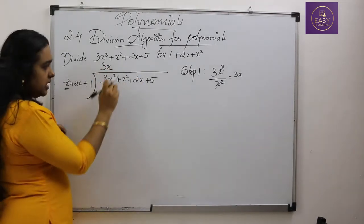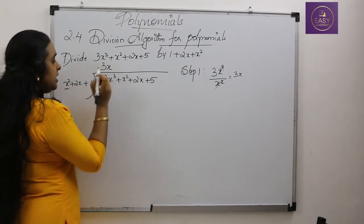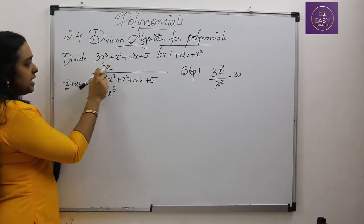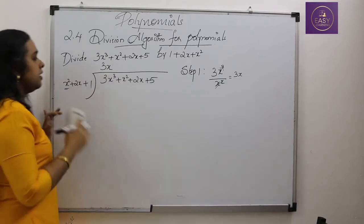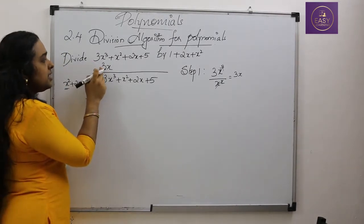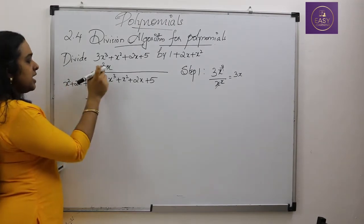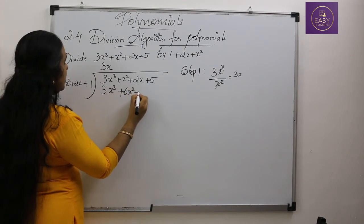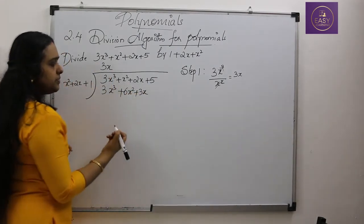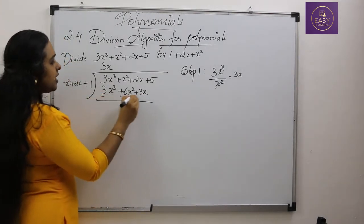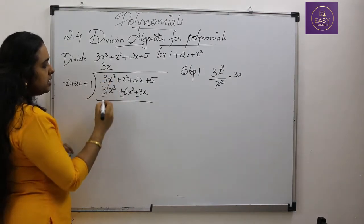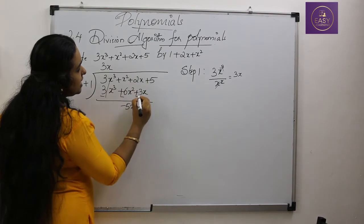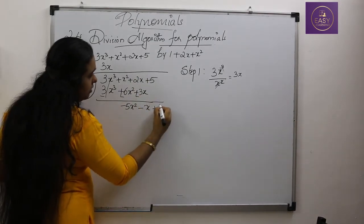Next, we multiply 3x with each term of the divisor: 3x × x² = 3x³, 3x × 2x = 6x², and 3x × 1 = 3x. Then we subtract: 3x³ − 3x³ = 0, x² − 6x² = −5x², 2x − 3x = −x. Bringing down the next term gives us −5x² − x + 5.